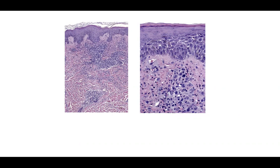Type B lymphomatoid papulosis looks a lot like mycosis fungoides — you may see epidermotropism — but it comes and goes rather than behaving like an established MF. Type B is typically CD30 negative. Type C has histology resembling anaplastic large cell lymphoma with large atypical cells, but it's usually CD30 positive and doesn't persist like true ALCL.